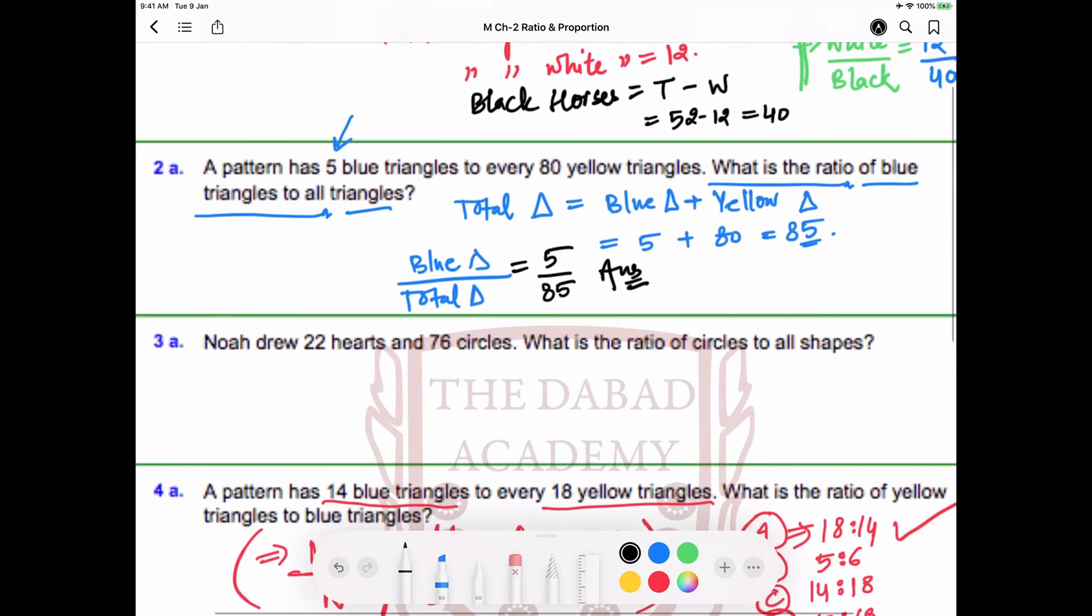The next question is: Noah drew 22 hearts and 76 circles. What is the ratio of circles to all shapes? This is exactly similar to the second question we just did. Total number of shapes equals 22 hearts plus 76 circles. Unit place added to unit place: 2 plus 6 equals 8, then 7 plus 2 is 9, so we get 98.